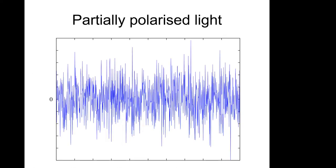So that's monochromatic light in a nutshell. There are some nice apps online — you could Google 'polarization ellipse Java applet' — that allow you to play around with parameters and draw different polarization ellipses. Now I'll switch to talking about partially polarized light.